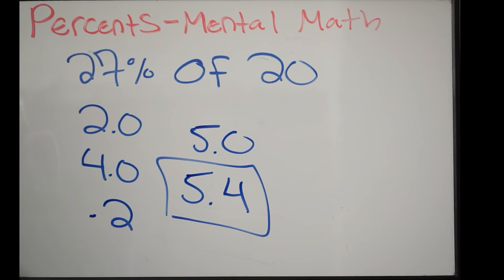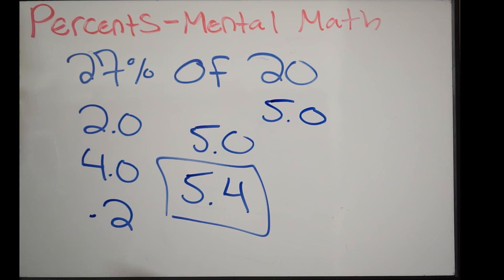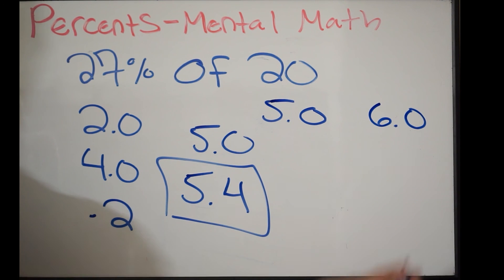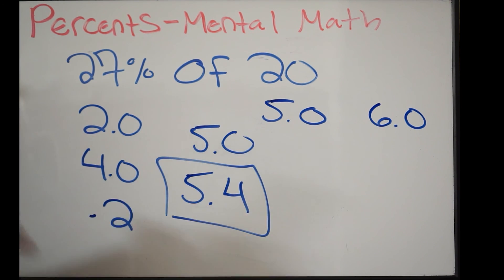With problems such as these, you can actually just round your answer because we know that 27% lies in between 25% and 30%. We already determined that 25% of 20 is 5. 30% of 20, well, here was 10%. Simply just multiply that by 3. That's going to give you 6. So we know that our answer is going to fall in between 5 and 6. You can kind of just round it in your head and estimate around like 5.4 or 5.5. So you can estimate these problems as well.